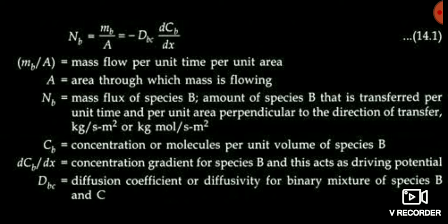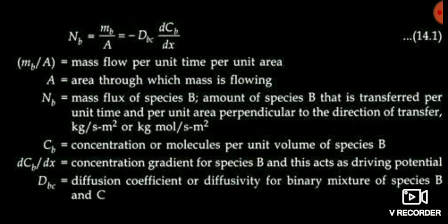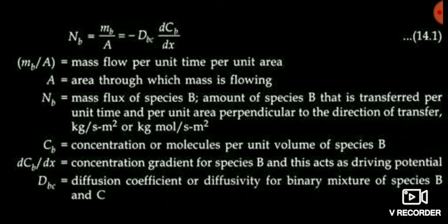Now, mass flux NB is equal to MB divided by A. The mass flux is directly proportional to DC by DX, meaning change in concentration per unit length. Here we use the diffusion coefficient or diffusivity. You should take care of the units of mass flux, which is kg per second per meter square — this is important. Also note the minus sign, which shows that mass transfer always takes place from higher potential to lower potential.